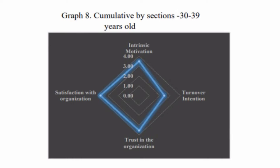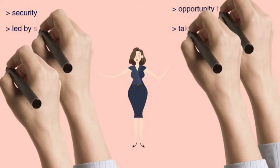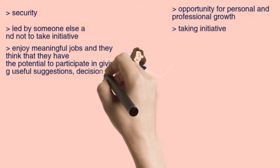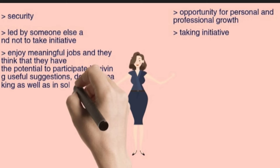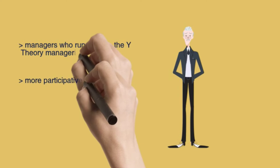This research was conducted through a questionnaire distributed to employees within the company, and the results show the following facts. For employees, security is more important than opportunity for personal and professional growth. They prefer to be led by someone else and not to take initiative. However, the majority enjoy meaningful jobs and think they have the potential to participate in giving useful suggestions, decision-making, and solving problems. It is confirmed that they have ambition. The majority did not agree that it is human nature to dislike work. The average arithmetic value for the XY Theory section is 3.17, showing that survey participants overall prefer managers who follow the Theory Y managerial style.